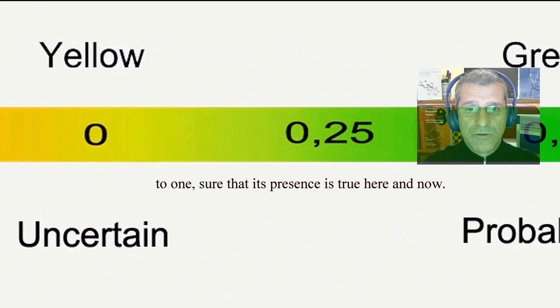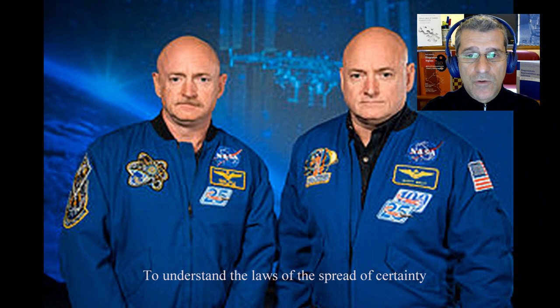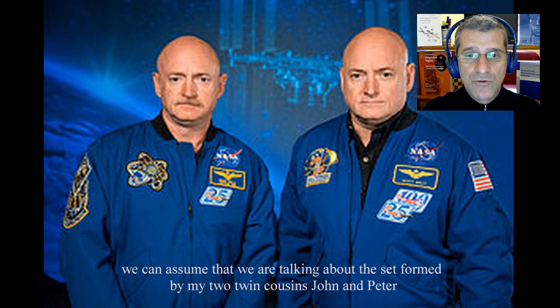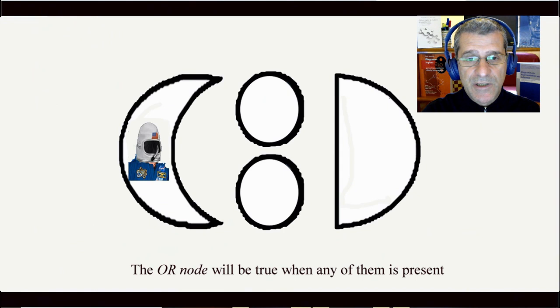Sure that its presence is true here and now. To understand the laws of the spread of certainty, we can assume that we are talking about the set formed by my two cousins, John and Peter. The OR node will be true when any of them is present.